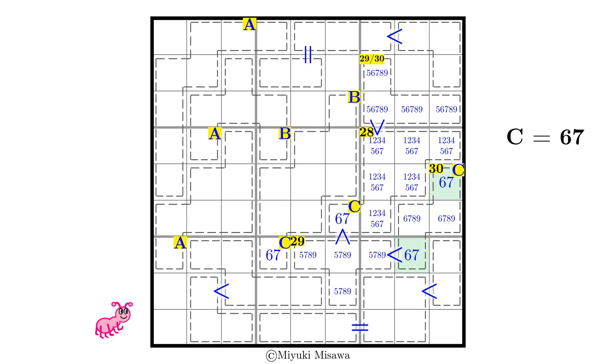Thus we have a 6-7 pair in the 30 cage, meaning the remaining cells are 8 and 9. And another in the 7th row, leaving only one spot for 7 in the 29 cage. That's our first solved number. Now this is 6, that means C is 6. This is 7.